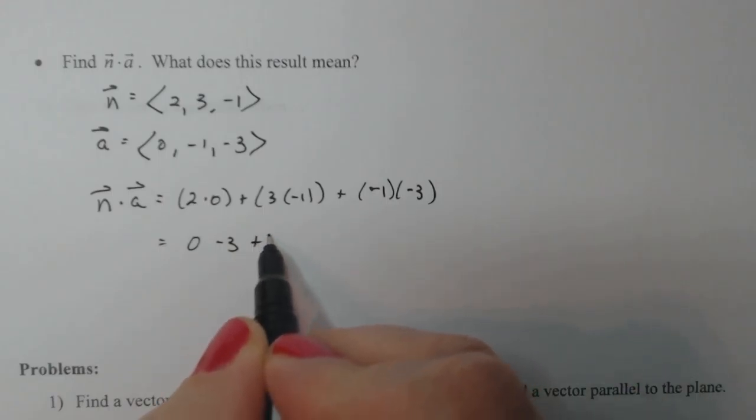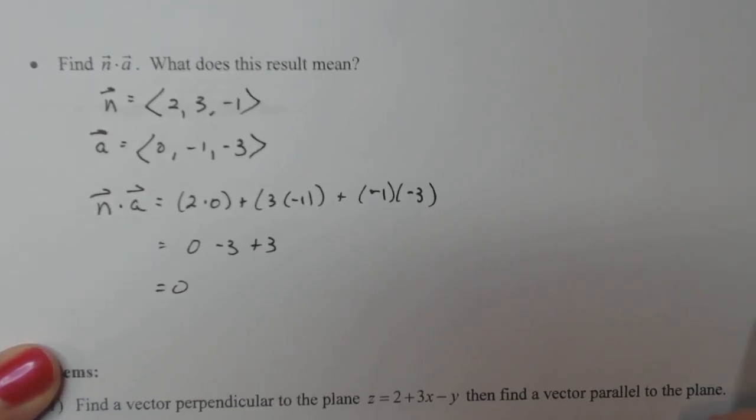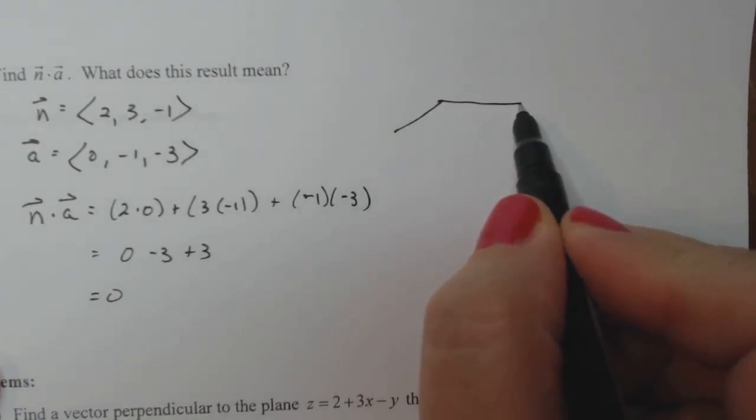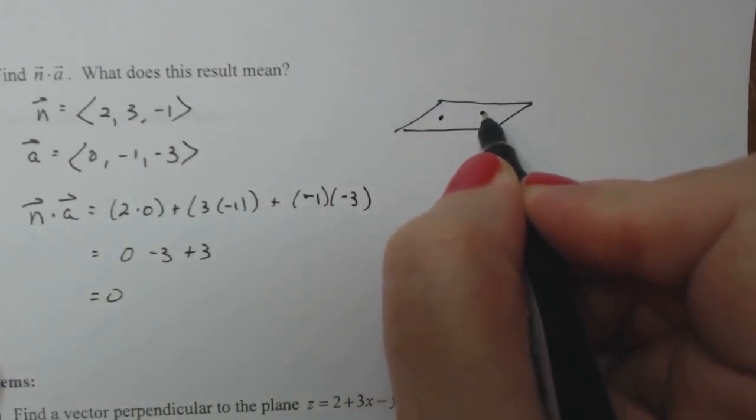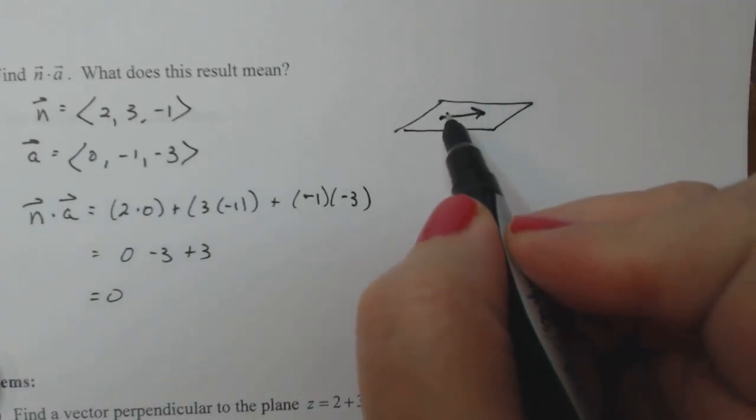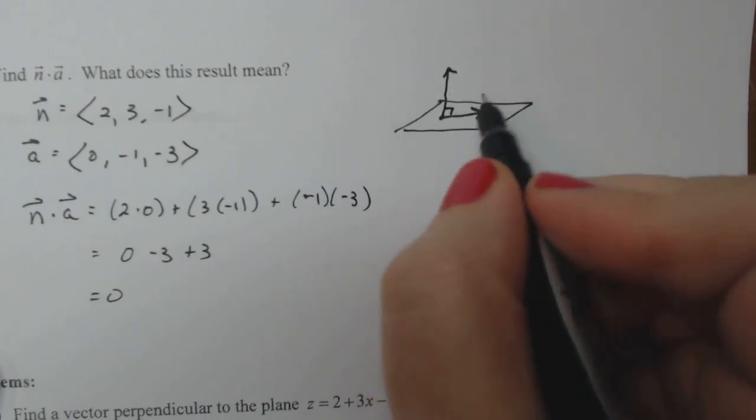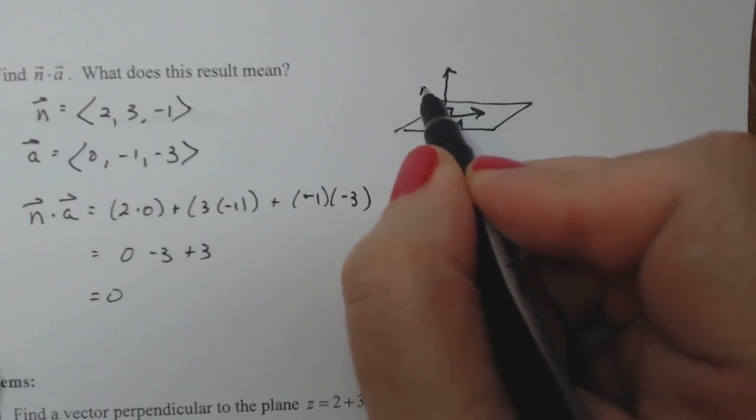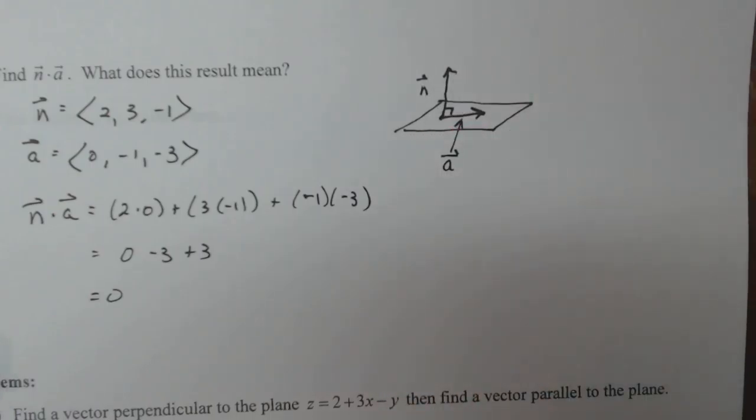I got zero minus three plus three and I get zero. So what does that result mean? That means that the vector n and the vector a are perpendicular. Let me draw a little picture. Here's my original plane, and we built a by picking two points in that plane and finding a vector between them. Then I took my vector n and dotted it, and I actually got the vectors being perpendicular.